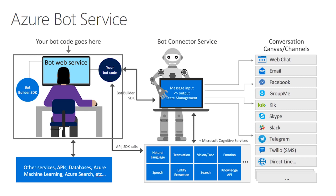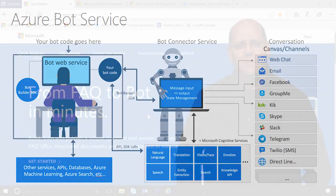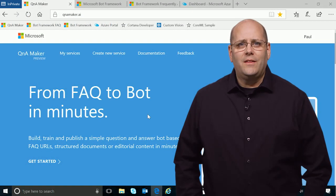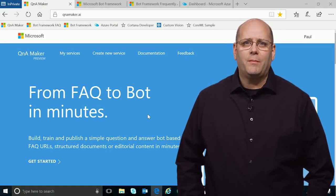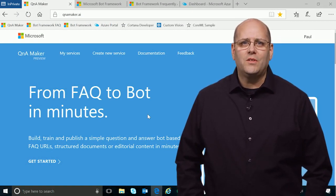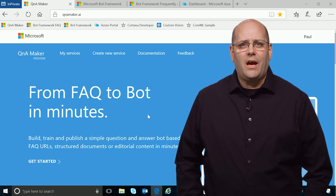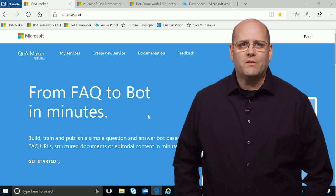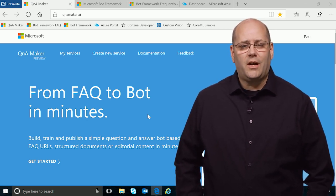Cognitive Services provides the brains for your bots. You then connect your bot to any number of channels, such as Facebook Messenger, Skype, Microsoft Teams, or you can create a custom channel to connect to your own host applications. In this demo, you'll see how to create an information bot using the Q&A Maker API, Azure Bot Service, and deploying the bot to Cortana.